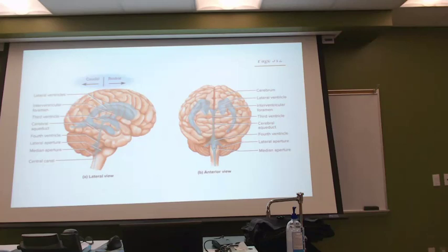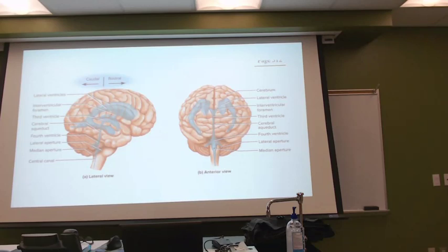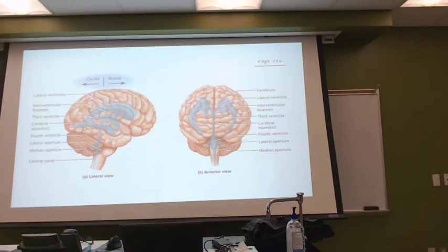When we think about the heart, blood that leaves the heart comes from the left side, through the aorta, into arteries, which are going to branch, branch, branch to a capillary bed. My artery leaves bringing blood from the heart, which is full of oxygen and nutrients. As it comes and enters on the arterial side of that capillary bed, we meet the venous side.